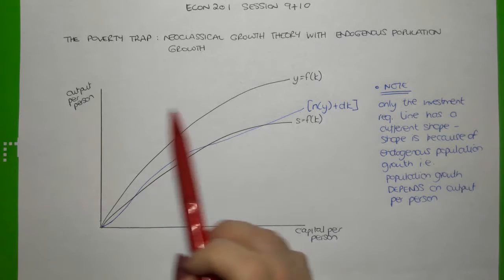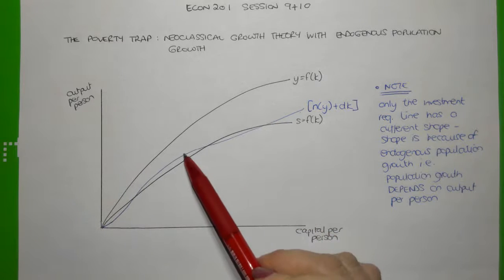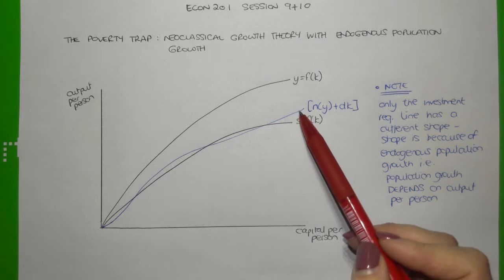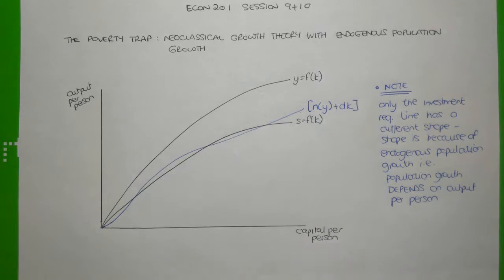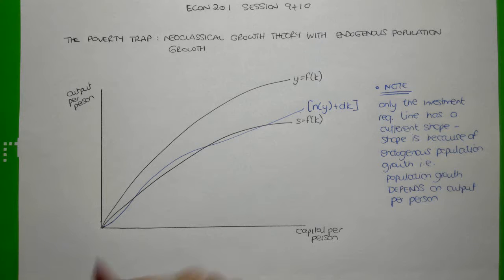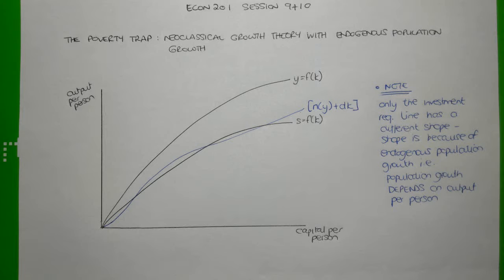Eventually, at higher levels of output per person, the investment requirement line becomes a constant slope. This is because at high levels of output per person, birth rates and death rates are typically low, so the population growth rate stabilizes at a somewhat lower level and the investment requirement line becomes a constant slope. So this investment requirement line has its unusual shape because the population growth rate is assumed to be endogenous with respect to output per person. Only the investment requirement line has a different shape, and it's because of the endogenous population growth — population growth depends on output per person.